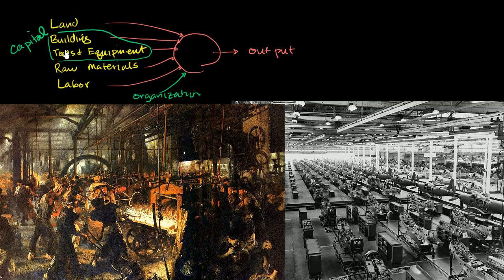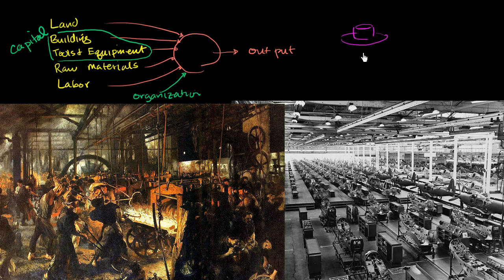Buildings and tools and equipment are kind of separated out from everything else, and in the classical sense they're referred to as capital. They have this separate distinction because these are things that are made by human beings for the specific purpose of producing other things. Obviously there are other things made by human beings — for example, a hat. A hat is clearly made by a human being, but it's not made to produce other things; it's meant for fashion, to improve someone's quality of life. But buildings and tools — the whole reason they were made is to make other things. And so in the classical sense, they are referred to as capital.